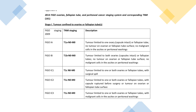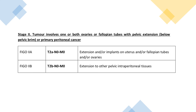Now, staging for tumours of the ovaries — FIGO staging 2009. FIGO 1A is tumour limited to one ovary or fallopian tube, no tumour on the ovarian or fallopian tube surface, and no malignant cells in the ascites or peritoneal washing. 1B is tumour limited to both ovaries or fallopian tubes, no tumour on surface, and no malignant cells in ascites or peritoneal washing. 1C1 is tumour limited to one or both ovaries or fallopian tubes with surgical spill. 1C2 is capsule ruptured before surgery or tumour on ovarian or fallopian tube surface. 1C3 is malignant cells in the ascites or peritoneal washing.